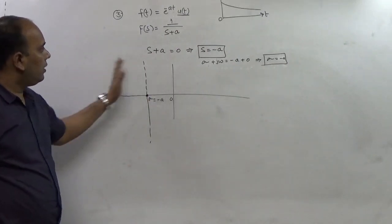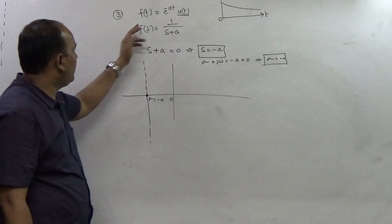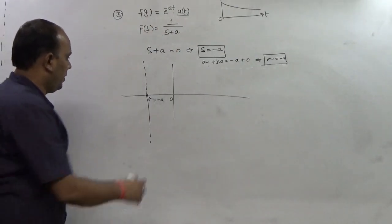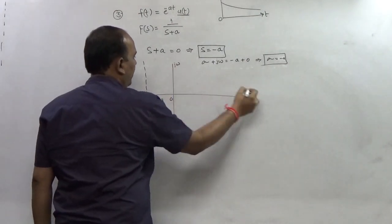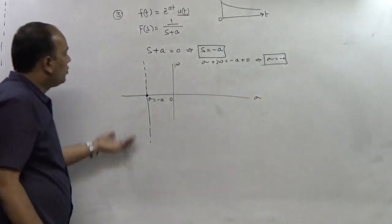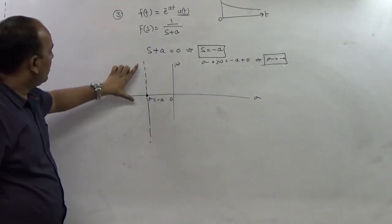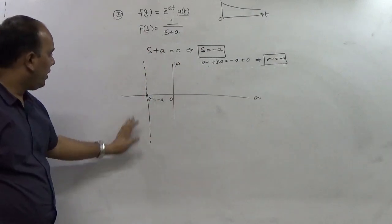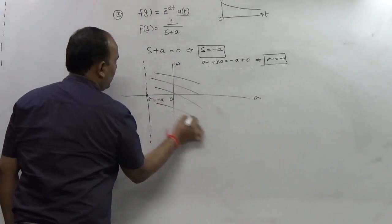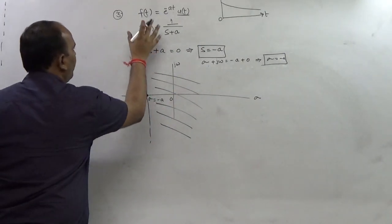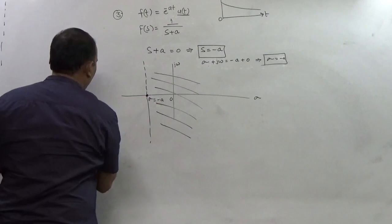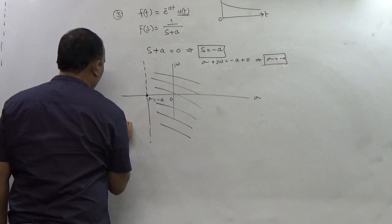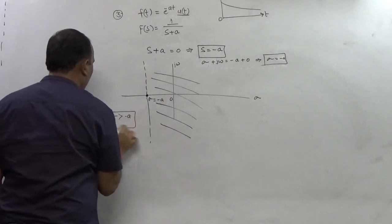The region of convergence lies to the right of this line. Since this is a right-sided signal, and this is the pole in the S-plane (the sigma + j*omega plane), as per the fundamental rule the region of convergence will lie to the right side of the pole. So the ROC of this function will be sigma greater than -a.